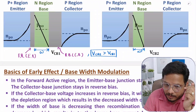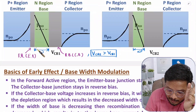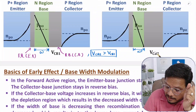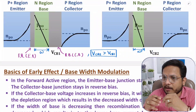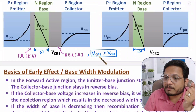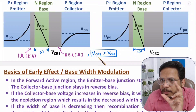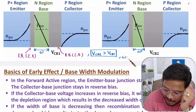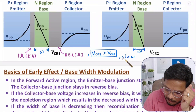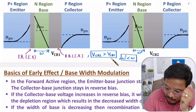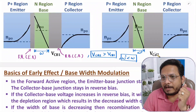The base width is decreasing — previously it was W, now it is W'. The reason is that the collector-base voltage is increasing. As you increase the collector-base reverse bias voltage, the base width decreases, so W' is lower than W.